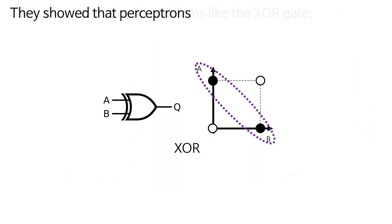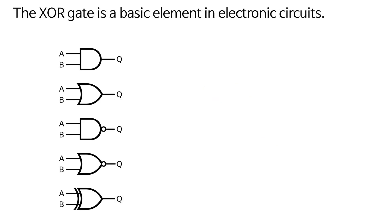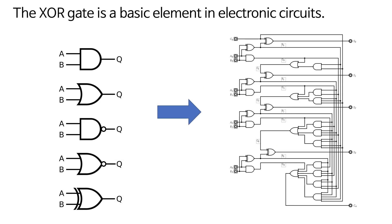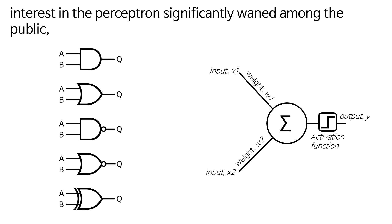They showed that Perceptrons can't even solve simple problems because it's a non-linearly separable problem. The XOR gate is a basic element in electronic circuits. When it was revealed that the Perceptron artificial neural network could not even solve the most basic gates that form the foundation of electronic circuits, interest in the Perceptron significantly waned among the public.